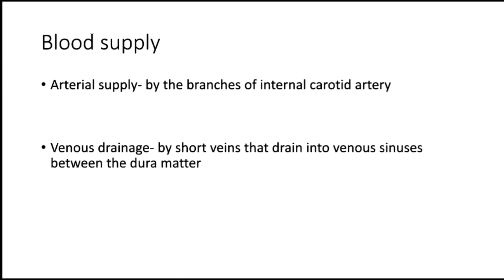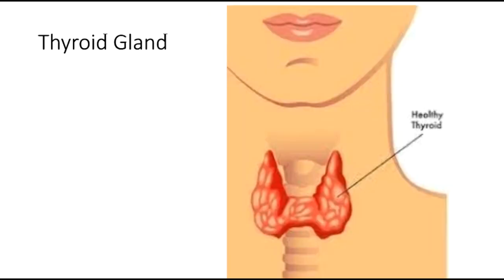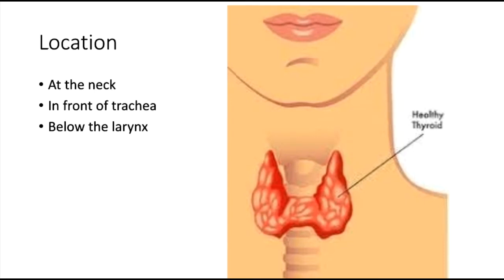Blood supply. The pituitary gland is supplied by the branches of the internal carotid artery. The venous return is by short veins that drain into venous sinuses between the dura mater. A network of capillaries known as the pituitary portal system connects the hypothalamus and pituitary gland.